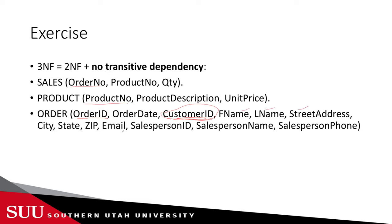Is there another transitive dependency? What about salesperson ID? The salesperson ID determines the salesperson name and phone — so that is another transitive dependency. The rule says we take these out and create their own tables. Customer ID becomes the key for a customer table, and salesperson ID becomes the key for a salesperson table. We then keep customer ID and salesperson ID in the order table as foreign keys.